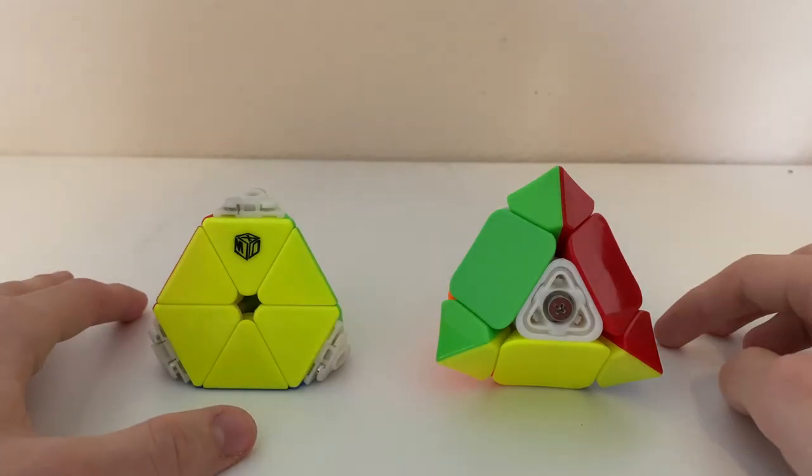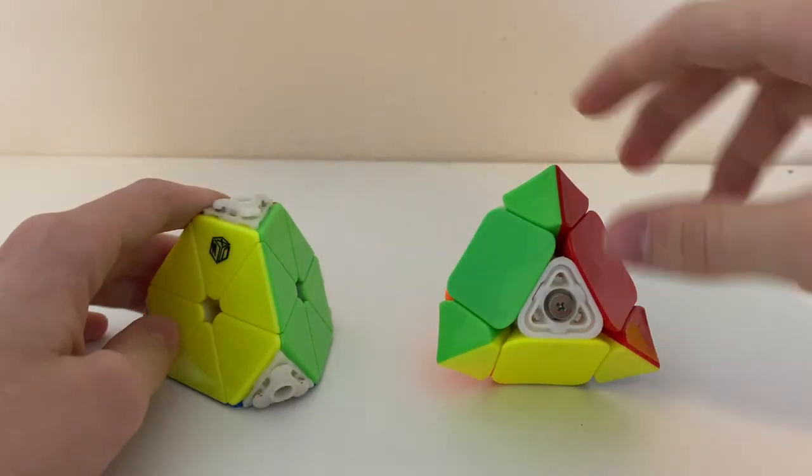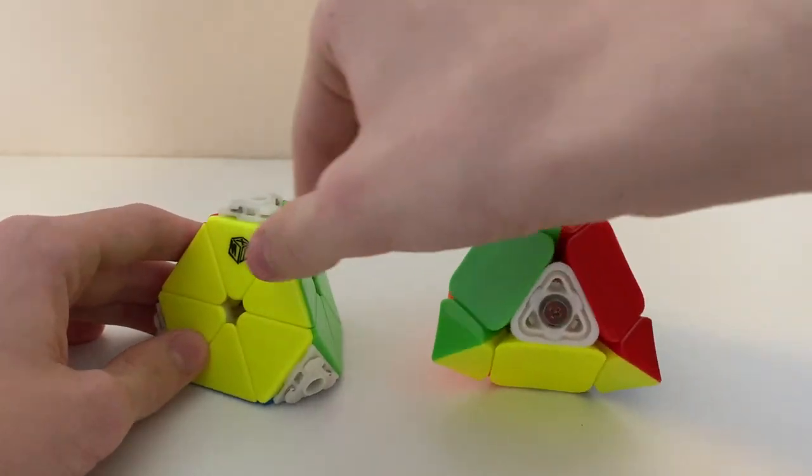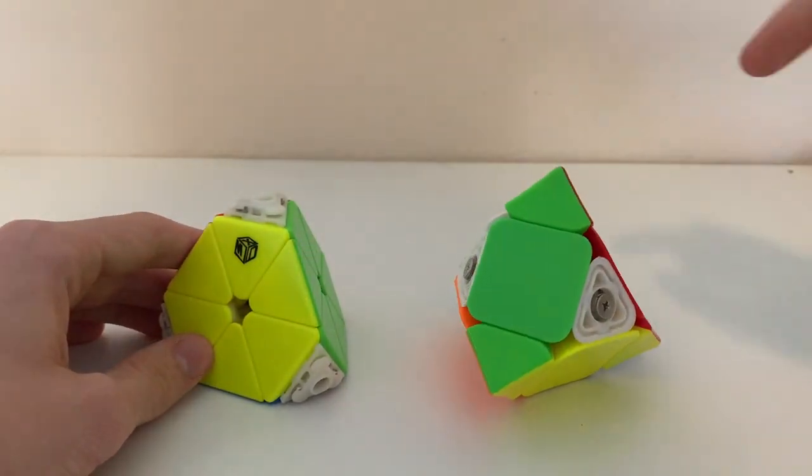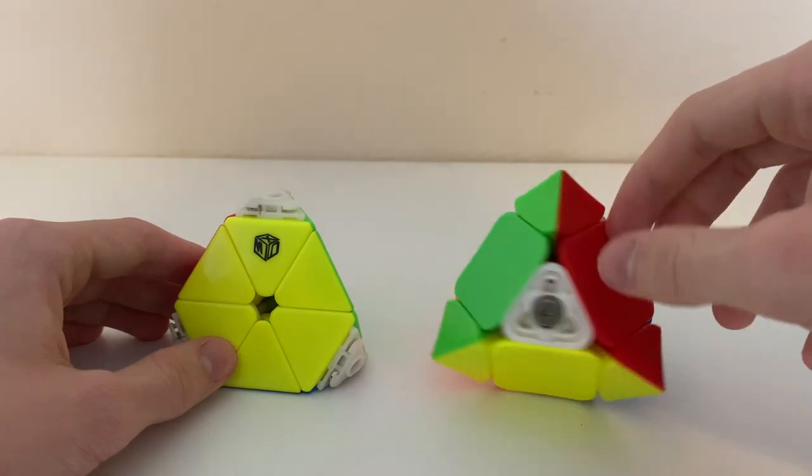So I actually lied when I said these two are the same. This has edges between its two corners, while this has centers. And edges can have two possible orientations, while centers can only have one. This means that solving a skewb like a pyraminx is actually easier than solving a pyraminx.